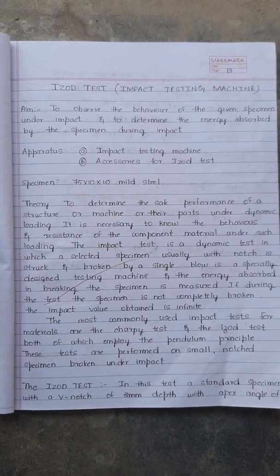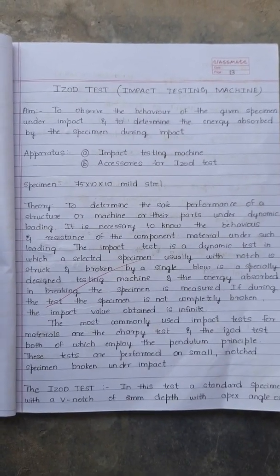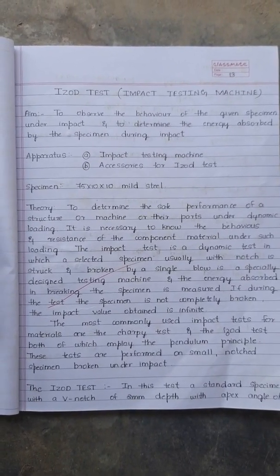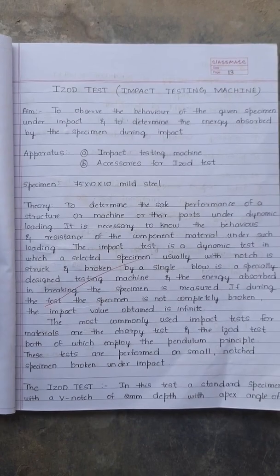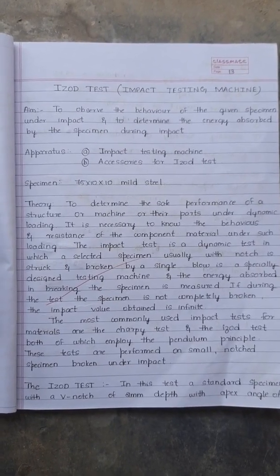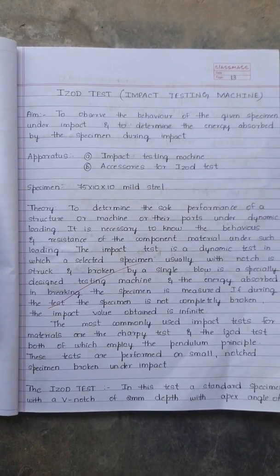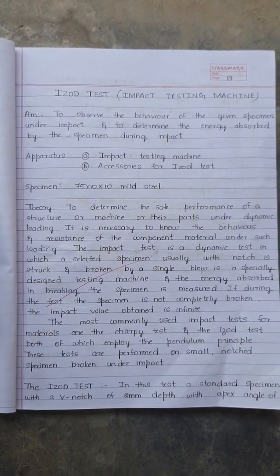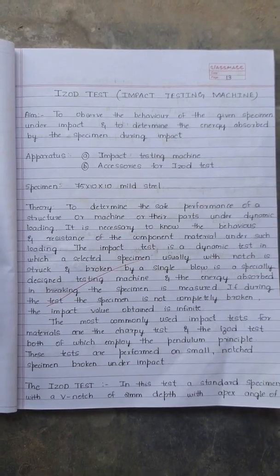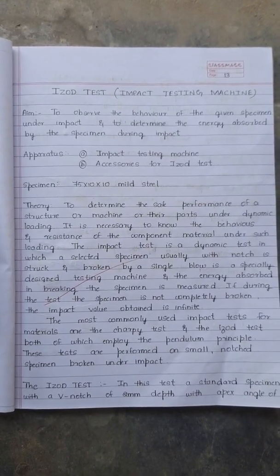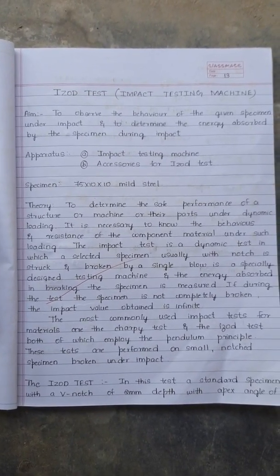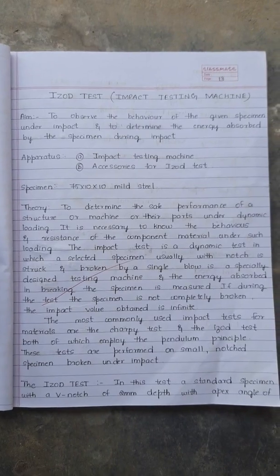Metal testing lab experiment number 8: ISO impact test. The aim is to observe the behavior of a given specimen under impact and to determine the energy absorbed by the specimen during impact. Apparatus: impact testing machine and accessories for ISO test.